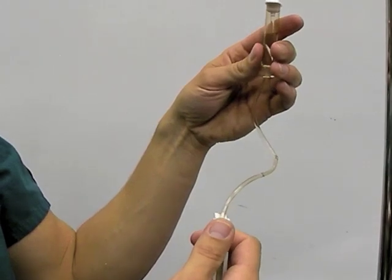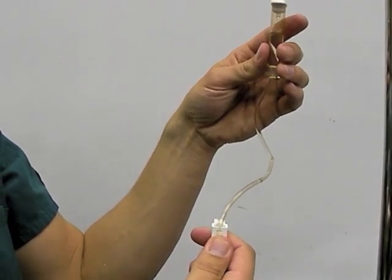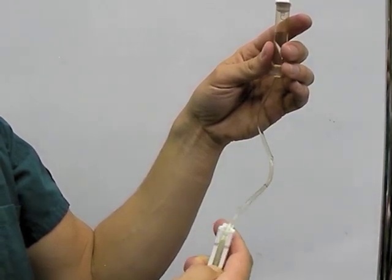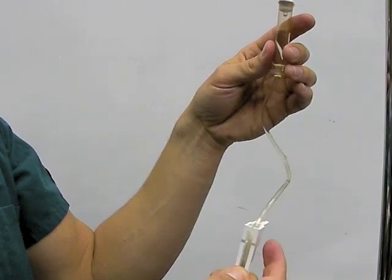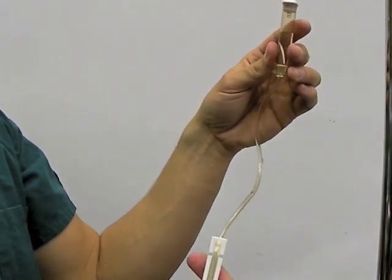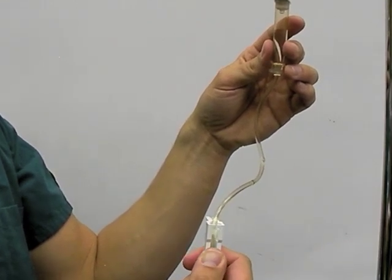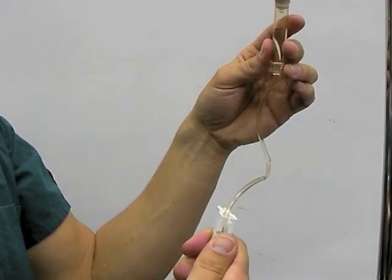If you look, you will see the IV fluid rapidly draining into the drip chamber, and as the wheel is rolled down, the rate of infusion decreases. If the wheel is completely down, the line will be completely occluded. You may then roll the wheel back up from the locked position until the desired drip rate is reached.